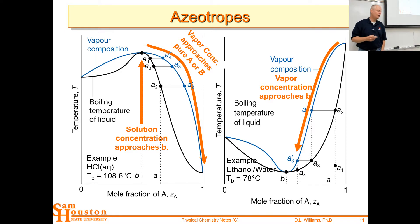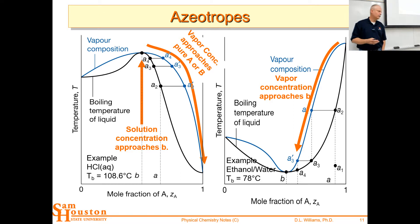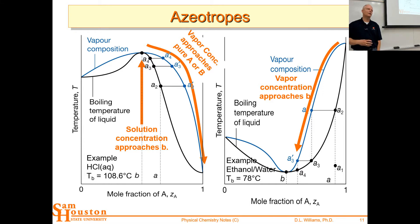You can separate whatever is excess from the azeotropic composition. Now let's look at the low-boiling azeotrope on the right. This azeotrope has a higher vapor pressure than either of the pure components, so it has a lower boiling point. This is the example for ethanol and water — whenever you try to distill ethanol away from water, you get the azeotropic composition: about 95% ethanol, 5% water.